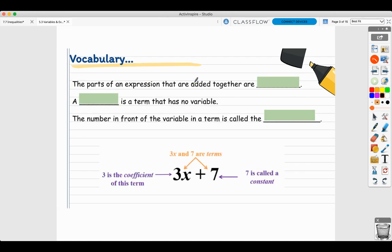The parts of an expression that are added together are terms. You can think of terms being separated by plus or minus. A constant is a term that has no variable. Seven is a constant because there is no variable attached to it directly.